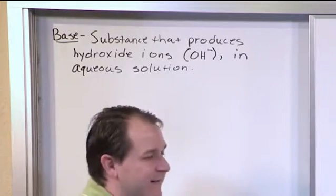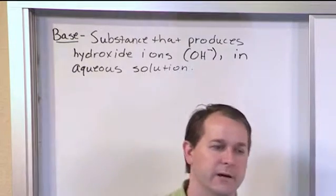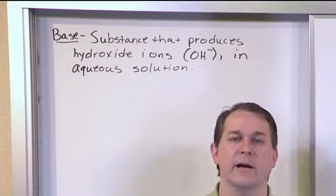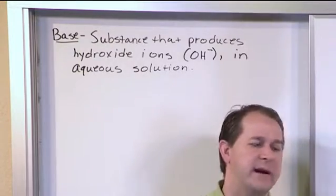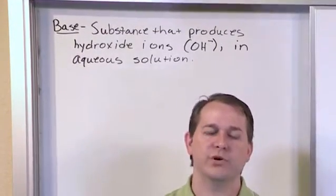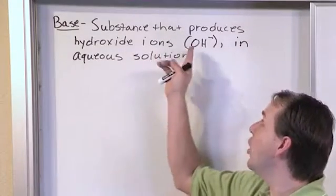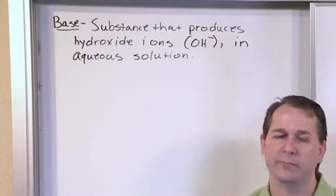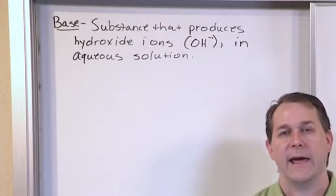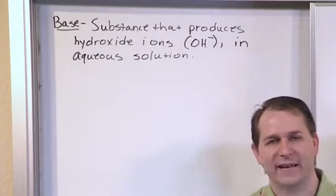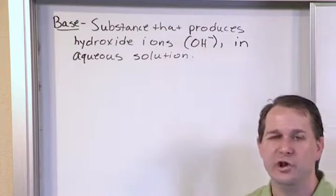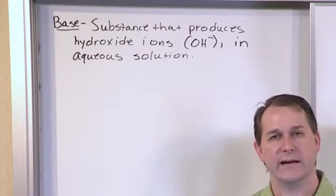Just like acids — you put them in water and they produce hydrogen ions, which defines an acid — a base is a substance that when you put it into water it produces OH. Notice OH is one of those polyatomic ions we talked about a long time ago. They exist as a unit, and the total charge on this OH unit is a negative one.